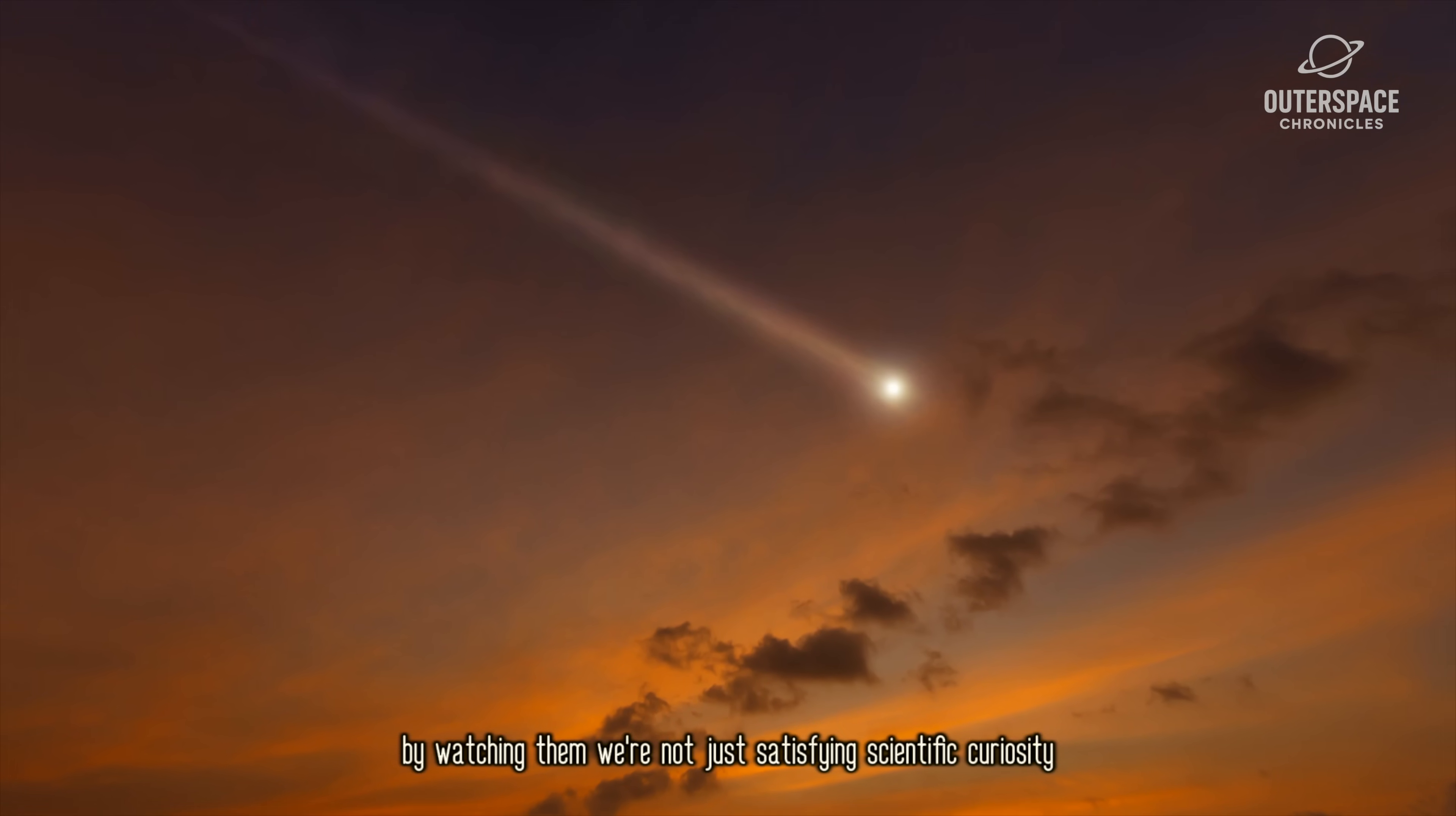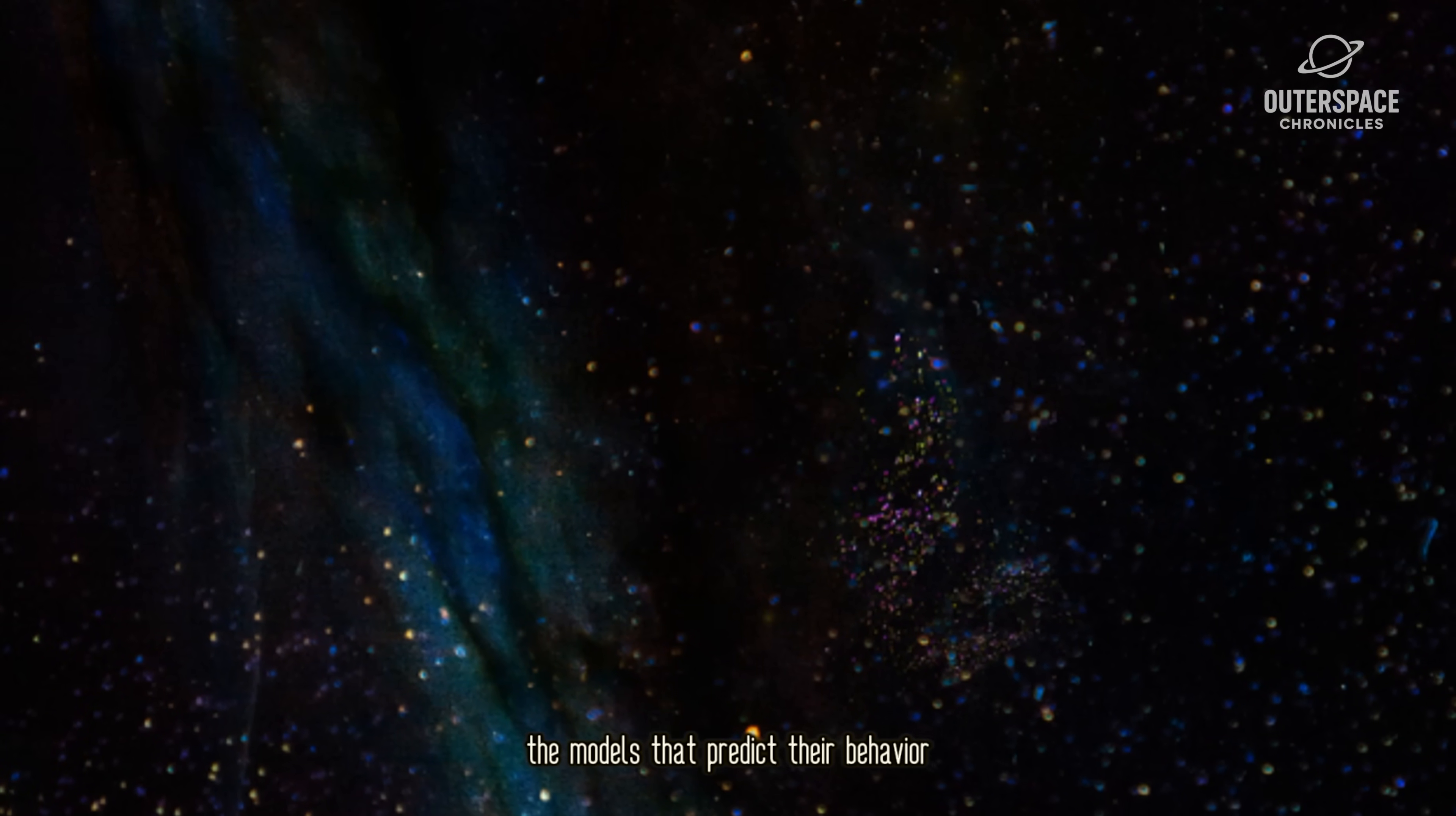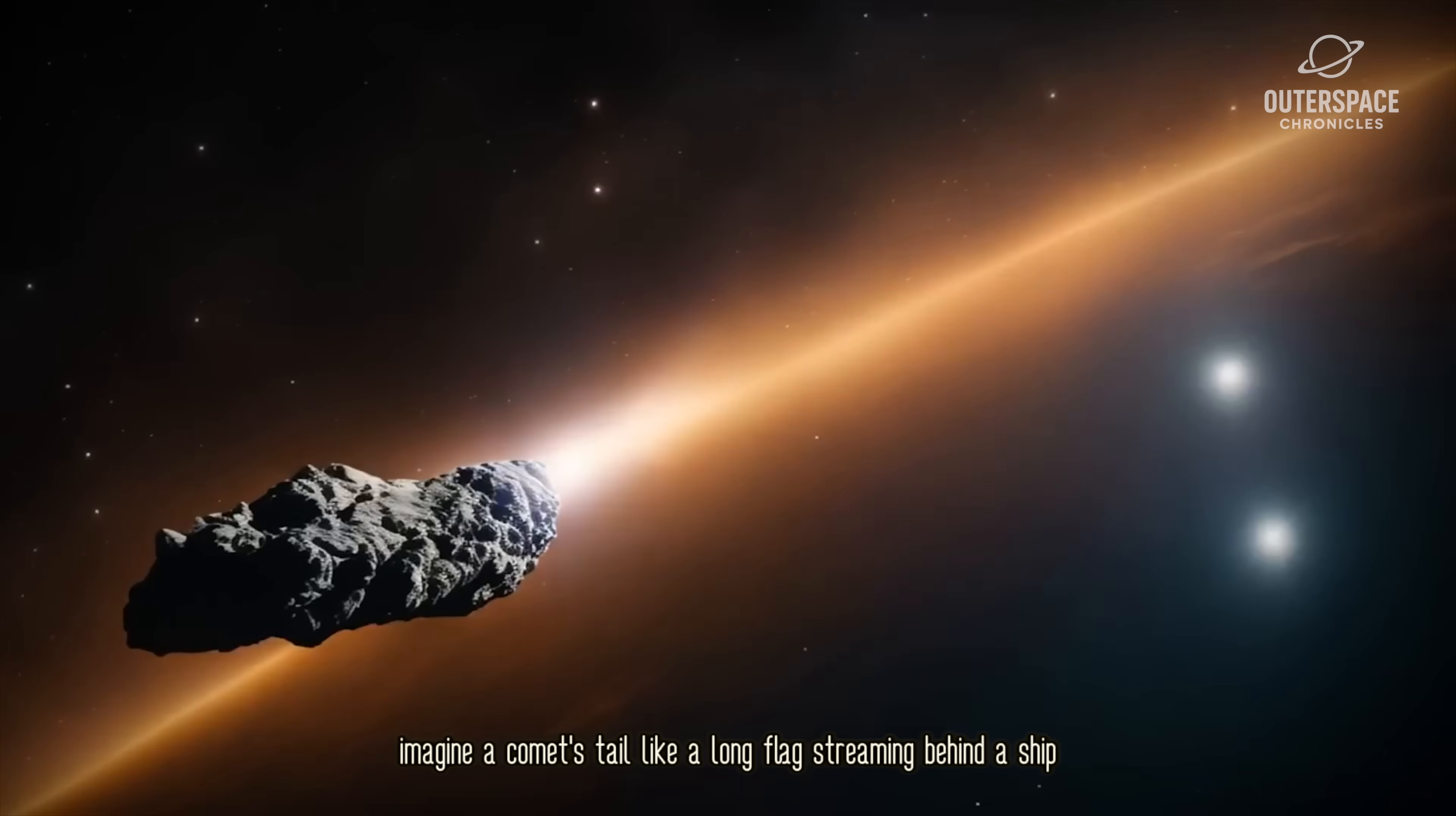Every single comet is a free sample of primordial material, a time capsule from the solar system's earliest days. By watching them, we're not just satisfying scientific curiosity, we're rehearsing for the day something bigger, something potentially dangerous, heads our way. This seven-comet convergence is a live ammo fire drill for planetary defense. We're learning about things like tail disconnection events.